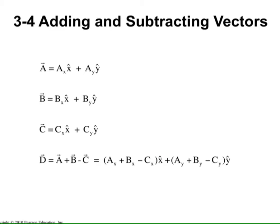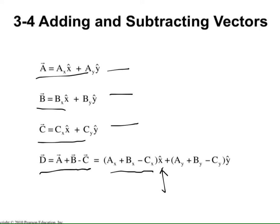For example, given vectors A, B, and C all expressed in terms of unit vectors, to find A + B − C: in the x-direction take Ax + Bx − Cx, and in the y-direction take Ay + By − Cy. The resulting vector is again expressed as the sum of an x-component and a y-component in unit vector form.